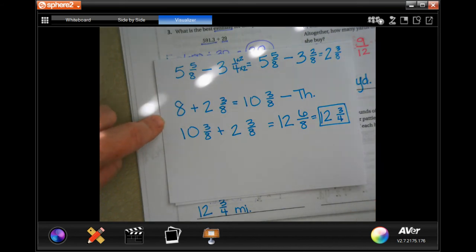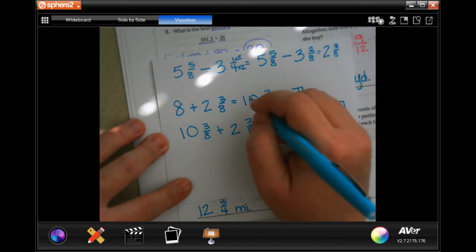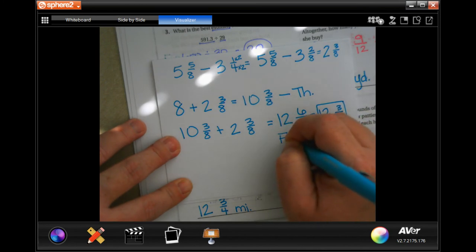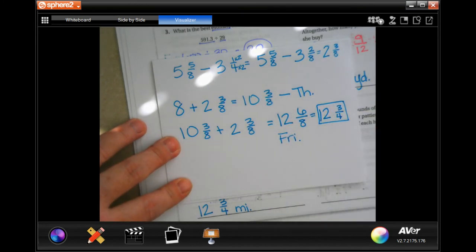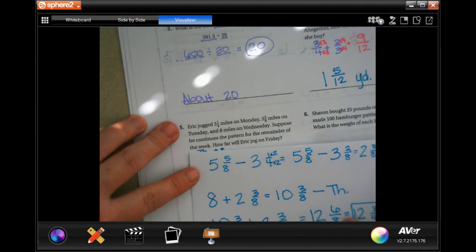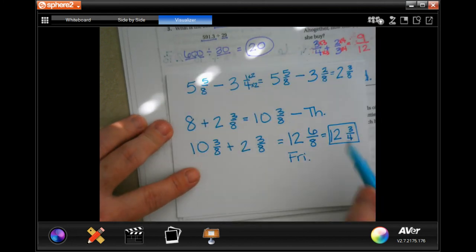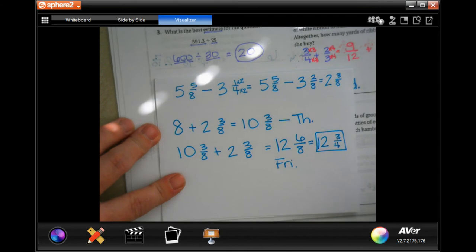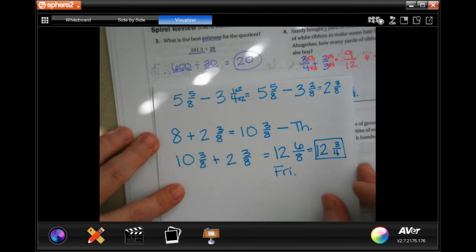Now, make sure that you're showing your work. Now, this one was Thursday. This one is Friday. We needed to know on Friday how far he would jog. Pause it. Go back. Do whatever you need to do to make sure you're writing down your work.